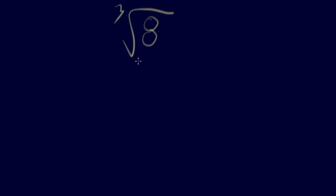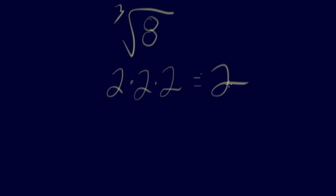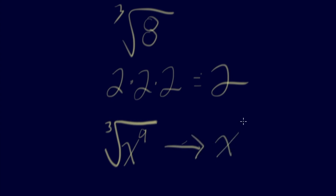Now let's talk about cube roots. The same idea applies, but now we ask: what number times itself three times gives you the radicand? The cube root of 8 is 2 times 2 times 2, so knowing your cube numbers is really important. Using the same division method: the cube root of x to the 9th — divide 9 by 3, which is simply 3. So the cube root of x to the 9th is x to the 3rd.